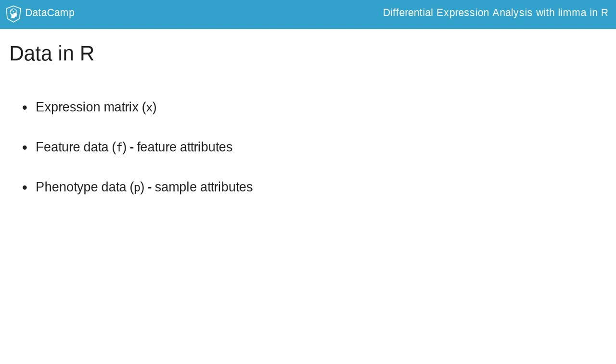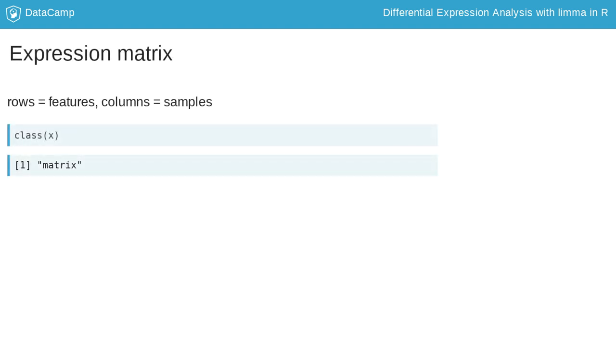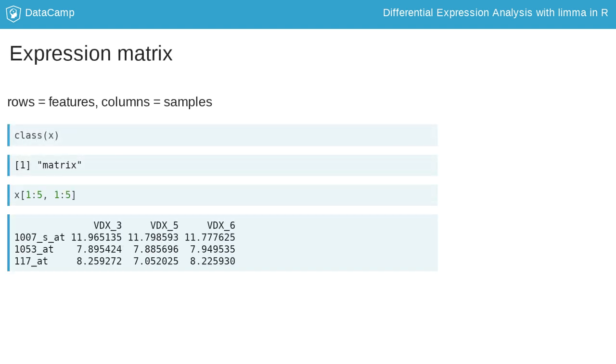You will refer to these as X, F, and P to facilitate potentially small screens, but I of course would recommend using more informative variable names in your real analysis code. For the expression matrix, each row is a feature that was measured, and each column is one of the samples. In the breast cancer experiment, 22,283 genes were measured for 344 samples.